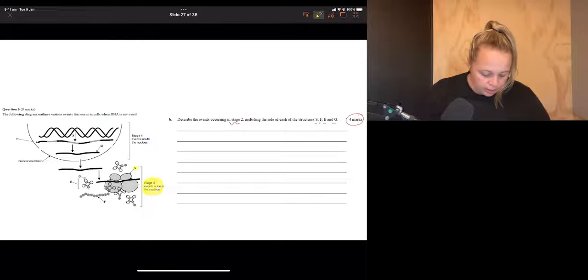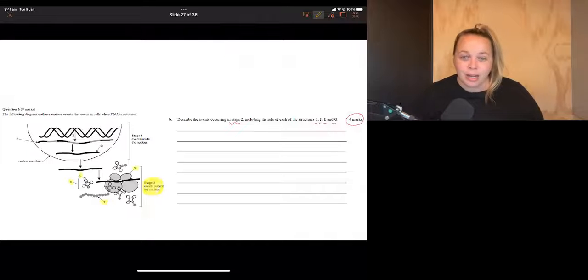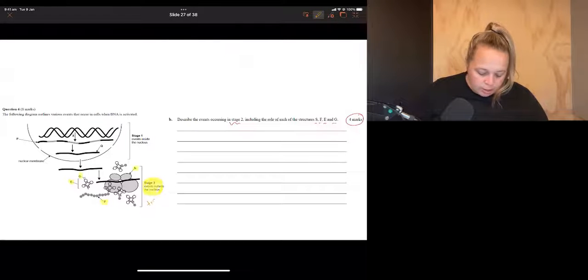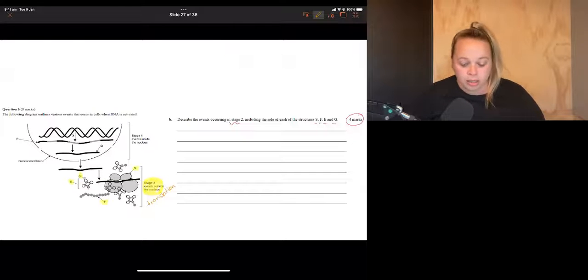We need S, we need F, we need E and we need G. And I'm just going to go through and label them before I even start my answer, so I make sure that I include them correctly when I'm writing my answer. So we know that this is the only stage that occurs outside the nucleus and that's called translation. Now there's nothing in the stem that talks about translation.